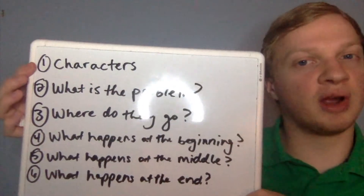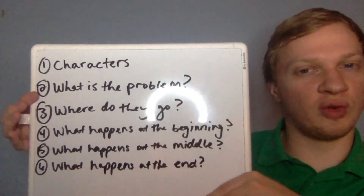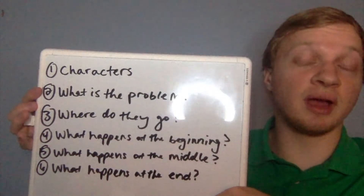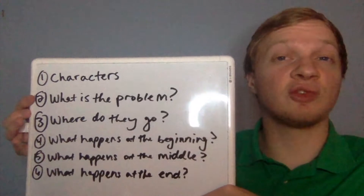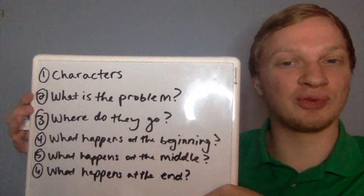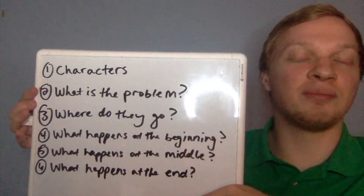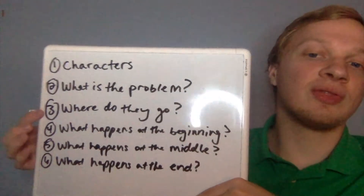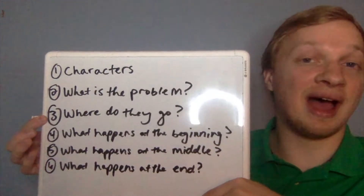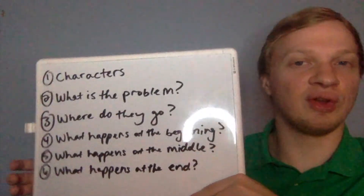Remember, the six parts are: characters; what is the problem in the story — and stories can have multiple problems too, if you want to write a book or a play that is longer, you can have multiple problems that need to be solved by the end; then what happens, where it happens, and what happens at the beginning, middle, and end of the story.